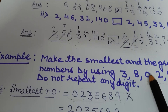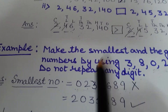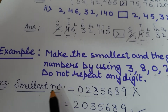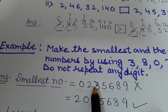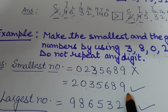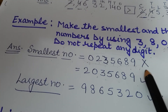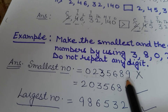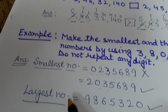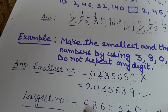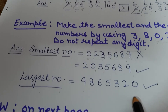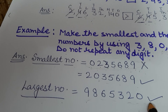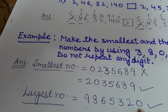So the rule is: if 0 is present in your digits, always put 0 in the second place when writing the smallest number — the rest of the sequence remains the same. For the greatest number, you change the order: write all digits in descending order, from largest to smallest. So the greatest number is 9, 8, 6, 5, 3, 2, 0.